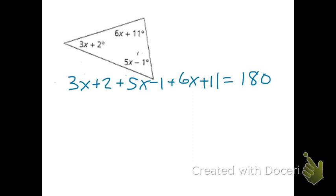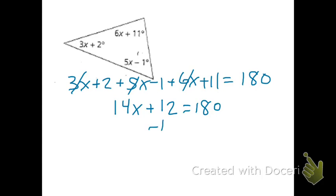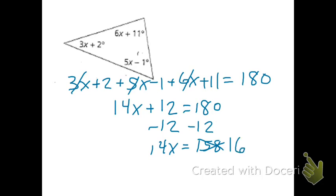Now it's just an algebra problem. Combining like terms: 3X plus 5X plus 6X is 14X. Then 2 minus 1 plus 11 equals 12. So 14X plus 12 equals 180. Subtract 12 from both sides — and correcting a mistake, 180 minus 12 is 168, not 158. So 14X equals 168. Dividing both sides by 14, we get X equals 12.